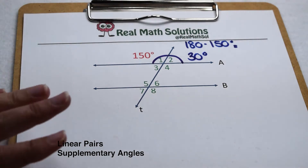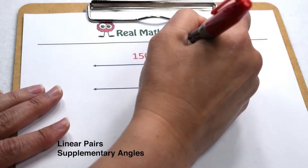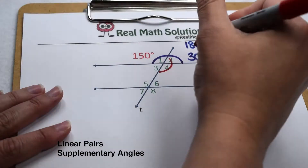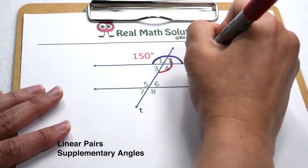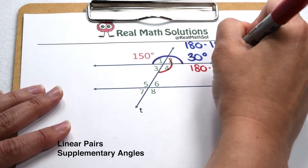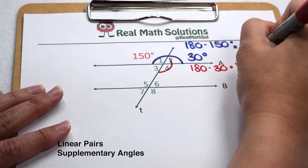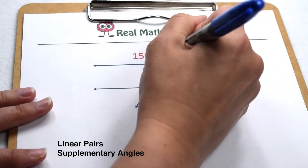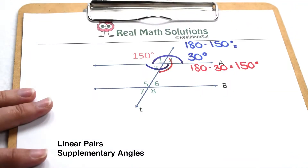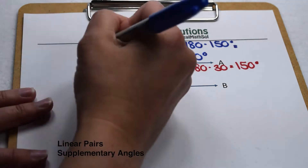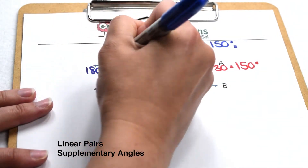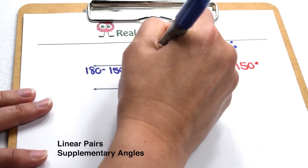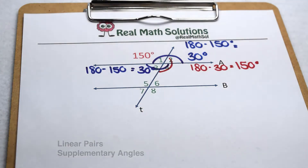Continuing with linear pairs and supplementary angles, angle two and angle four are also a linear pair and supplementary. So we can do 180 minus 30 degrees to see that angle four is going to be 150. Angles three and four are another linear pair, so 180 minus 150 tells us that angle three is also 30 degrees.